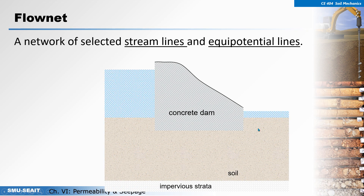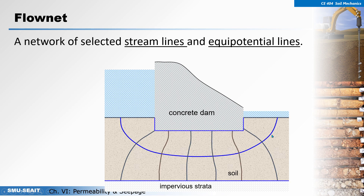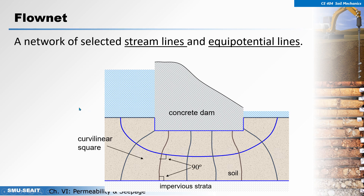The flow net is a network of selected streamlines and equipotential lines. In our problem with the dam, if you draw a series of streamlines and equipotential lines from upstream to downstream, all of this together is considered a flow net. The boundary between the concrete dam and the soil will be an equipotential line, and the boundary between the impervious strata and the soil will be another. In this figure we have three streamlines and eight equipotential lines.